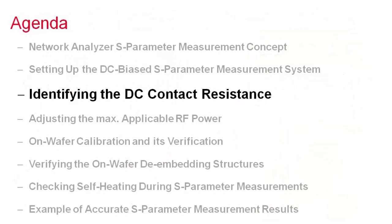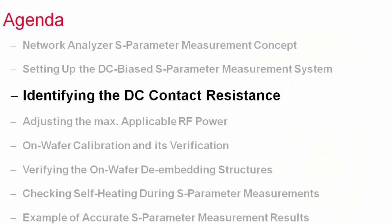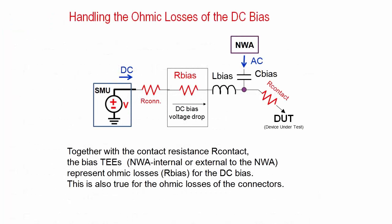We are now ready to go step by step through the preparations of the S-parameter measurements. We first determine the ohmic losses of the DC bias path, represented by the connector and cable losses, the loss in the bias tees where DC and RF signal are combined, and the on-wafer contact resistance.